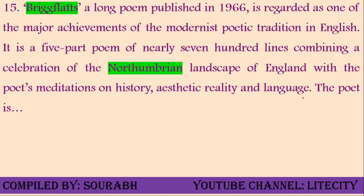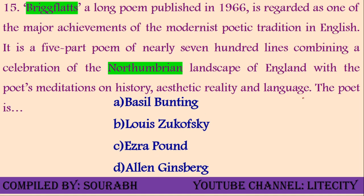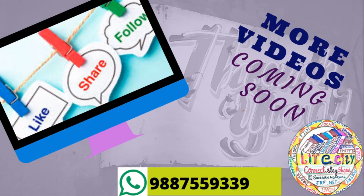Question fifteen: 'Briggflatts,' a long poem published in 1966, is regarded as one of the major achievements of the modernist poetic tradition in English. It is a five-part poem of nearly 700 lines, combining a celebration of the November landscape of England with a poet's meditation on history, aesthetic reality, and language. Options: Basil Bunting, Louis Zukofsky, Ezra Pound, or Allen Ginsberg. Louis Zukofsky wrote the very popular poem 'A,' which is also a hallmark of modernist poetry. Ezra Pound is not only a mentor of T.S. Eliot but also introduced Imagism. Allen Ginsberg was related with the Beat Generation and presented very radical ideas. Basil Bunting is the writer of 'Briggflatts,' a very important modernist poem.